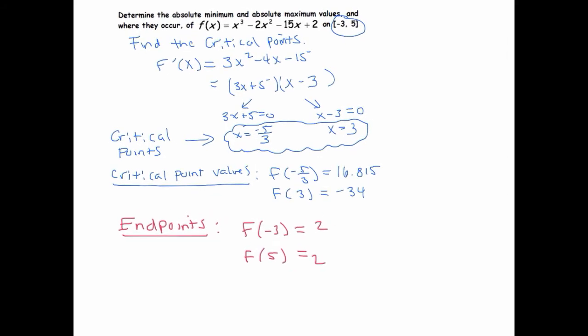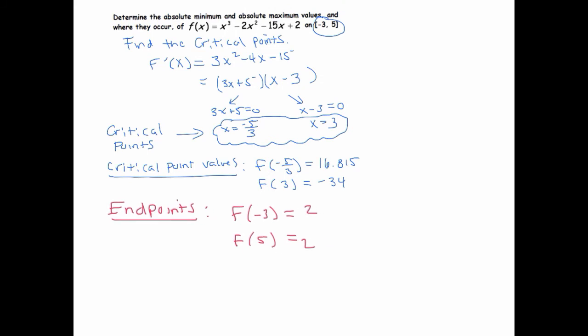So just to summarize a little bit, I'm kind of a visual person. I like to make a little picture. So we know that this is defined in the interval negative 3 to 5. I know that at negative 3 and 5, my y values are 2. And I know that I've got critical points at negative 5/3, which is like negative 1 and 1/3.